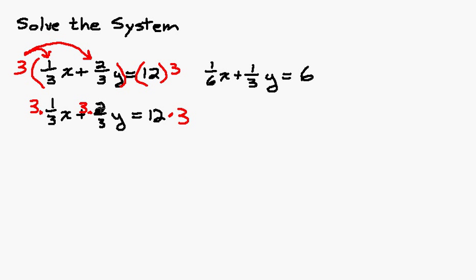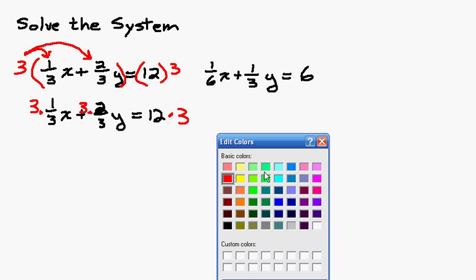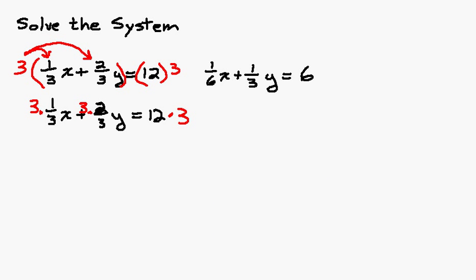Once you get good at this you can skip this first step with the parentheses and the distributing, but I really wanted to show you that you are multiplying every term by 3 and it's the distributive property that you're using.